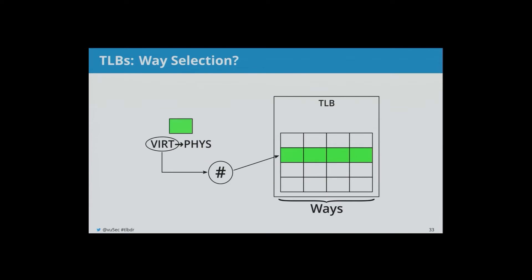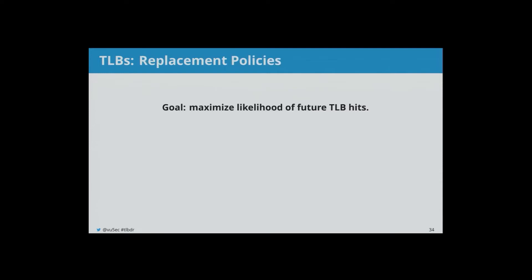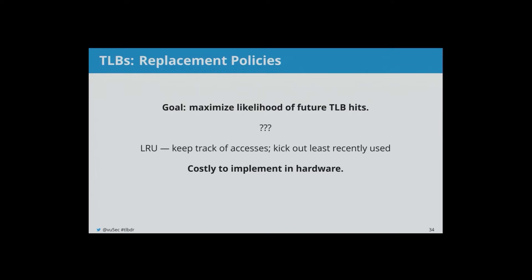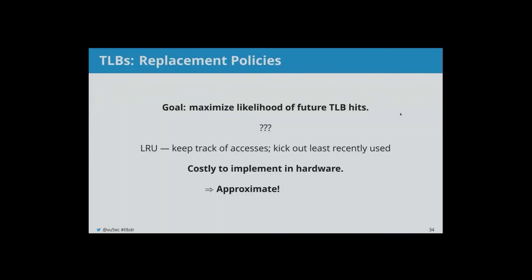One more question: how do ways get picked for eviction — i.e., if a set is full, which entry do you evict? This is called the replacement policy, and its goal is to maximize the likelihood of future hits. A common textbook implementation is least-recently-used (LRU): keep track of every access and kick out the least recently used entry. However, this is costly to implement in hardware since you need a counter for every way, so the solution is to approximate LRU.